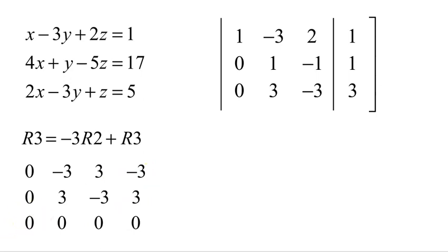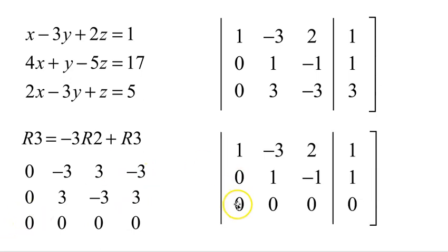So what that equation tells me is 0x plus 0y plus 0z equals 0. That's true. If it were 0, 0, 0 and then a number other than 0, that would be false. For example, if it was 0, 0, 0, 5, you cannot have 0x plus 0y plus 0z equals 5. But I can have 0x plus 0y plus 0z equals 0. So we were unsuccessful in getting our usual form of 1, 0, 0, 1, 0, 1. But this is as far as we can go.